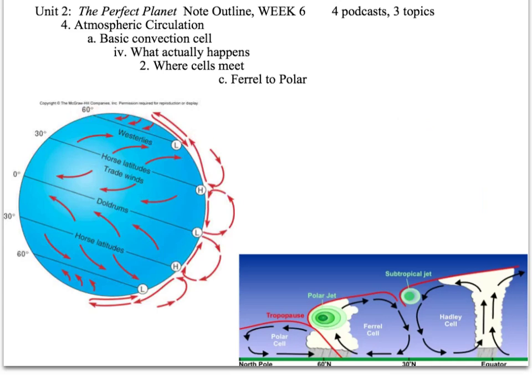And finally, at 60 degrees latitude north and south, you do get rising air again as the Ferrell cell hits the polar cell. There's a polar jet stream there, subtropical jet stream there that I forgot to mention.